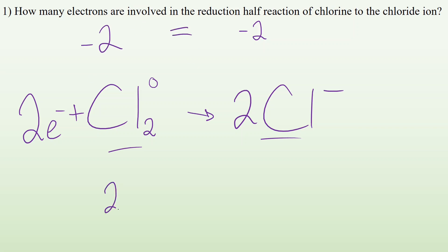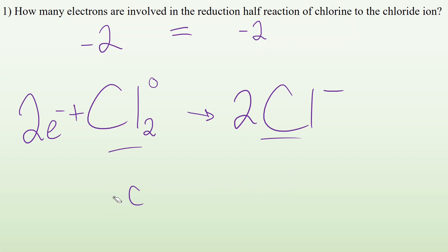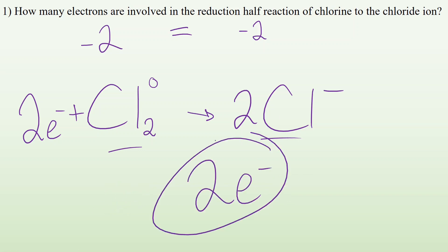The number of chlorine atoms is also balanced — everything is balanced. So the answer is two. How many electrons are involved? Two electrons.